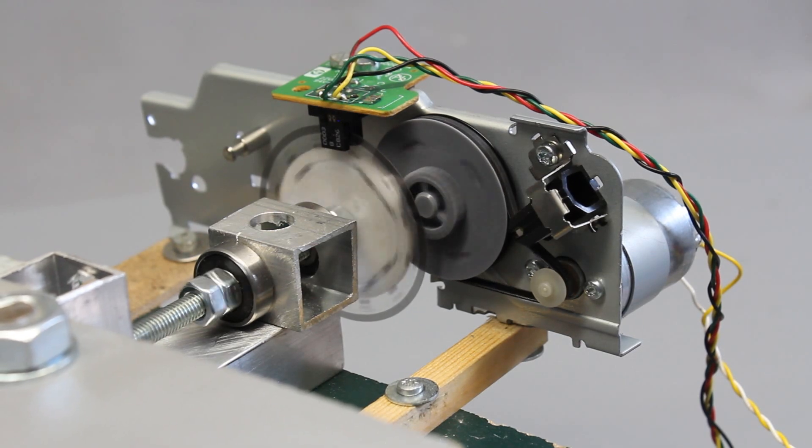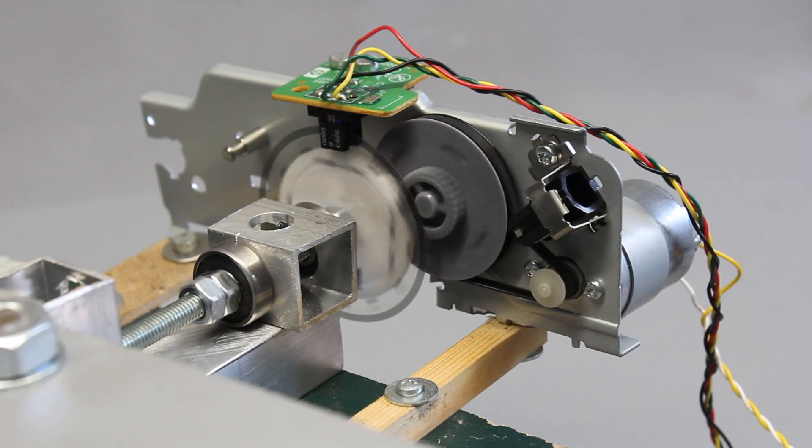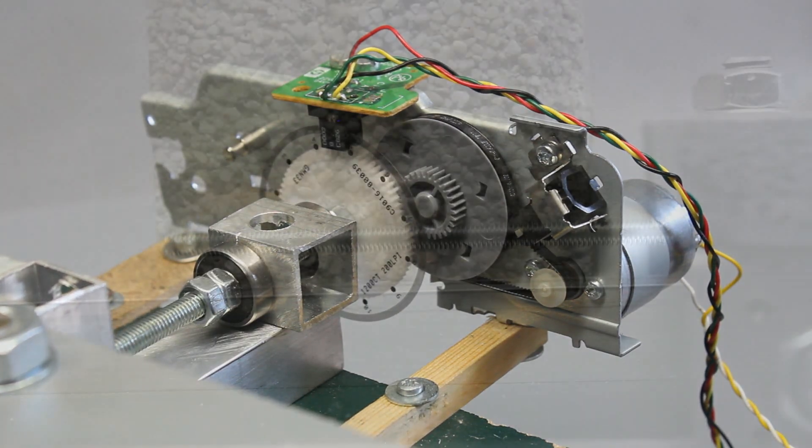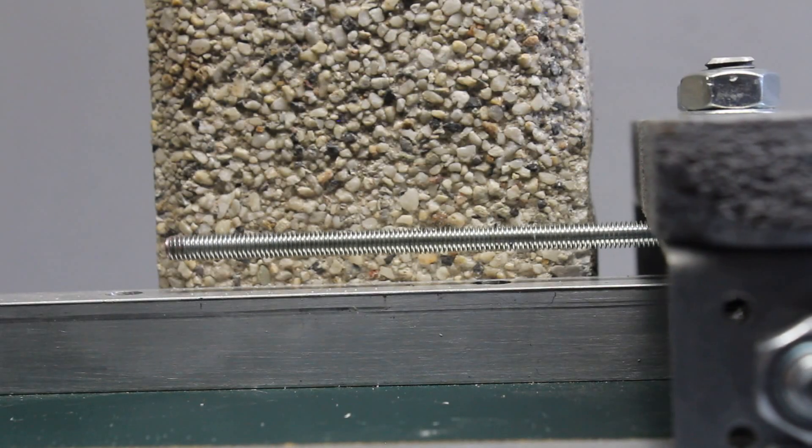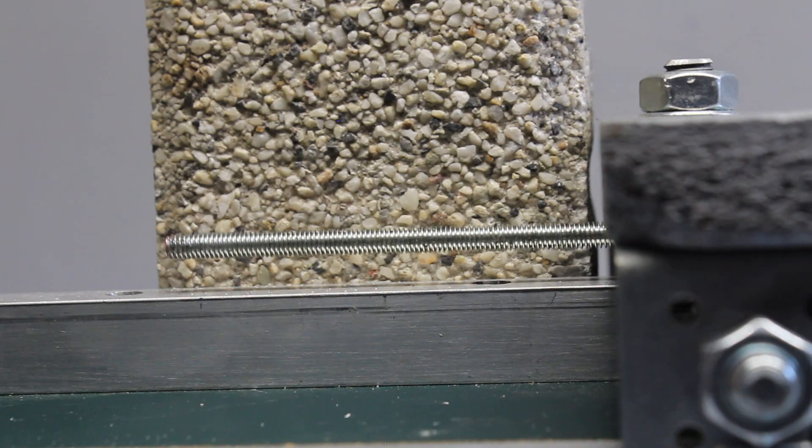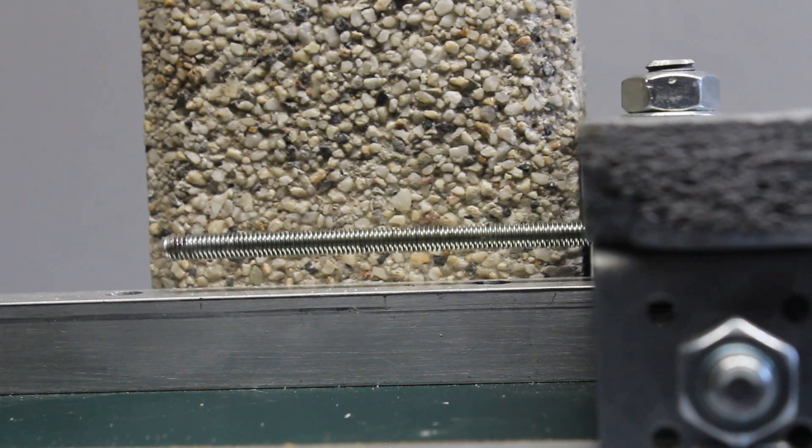The motor must make 12 turns in order to move the carriage for 1mm, which is a large overall transmission. The speed of the linear drive is approximately 1mm per second, thus it is a rather slow but powerful movement.